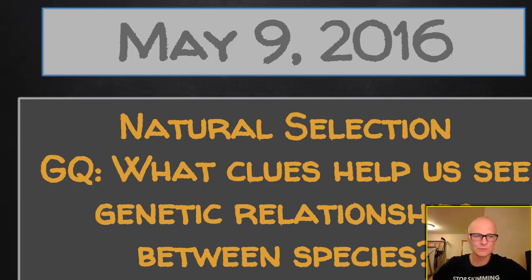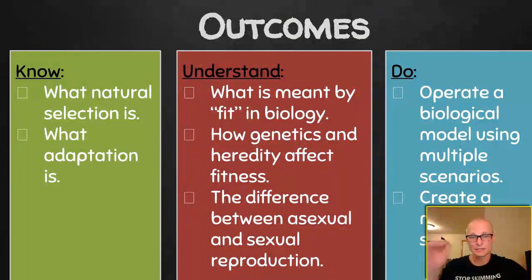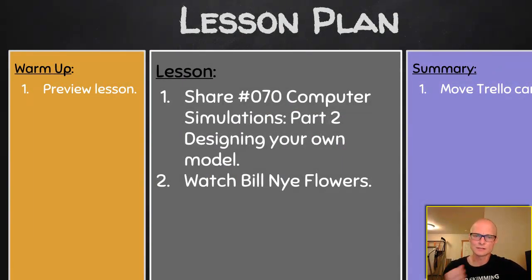Topic: natural selection. Our guiding question is: what clues help us see genetic relationships between species? We don't want to just look at them and guess — if we try to figure out this whole puzzle of life out, it's important that we try to get it right. So we want to know what natural selection and adaptation are, and we still want to go with the idea of fitness and genetics and reproduction methods and understanding all those scenarios.